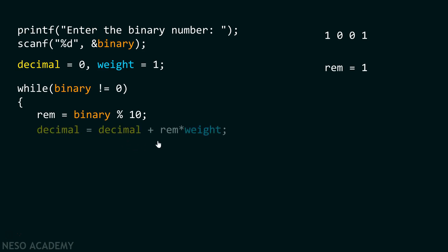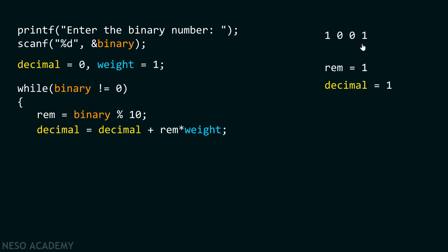The next step is to multiply rem by weight. The weight of this particular bit is 1, so we multiply rem by its weight, which is 1 into 1, giving us 1. Decimal initially contains value 0, so 0 plus 1 is 1, which gets stored inside the decimal variable. Next, we need to truncate this bit out of the number. We divide the number by 10 and store the quotient inside the binary variable, which gives us 100 in this case.